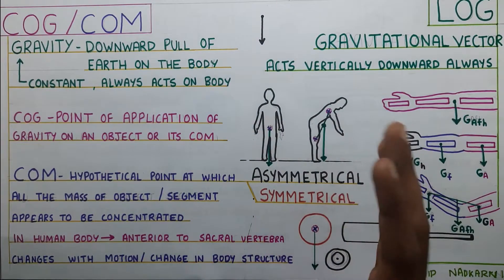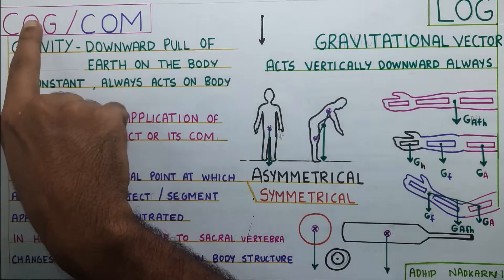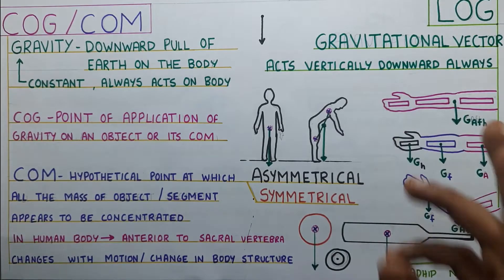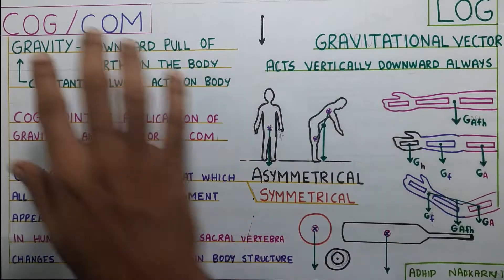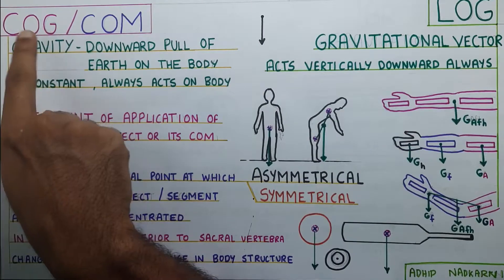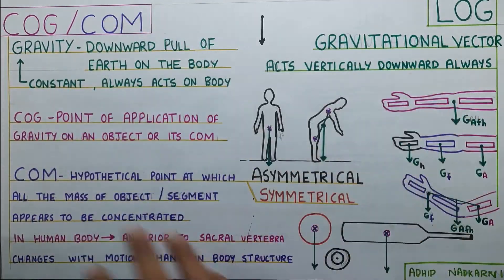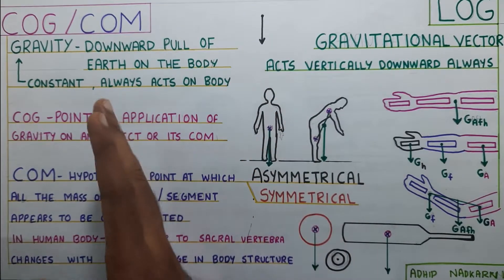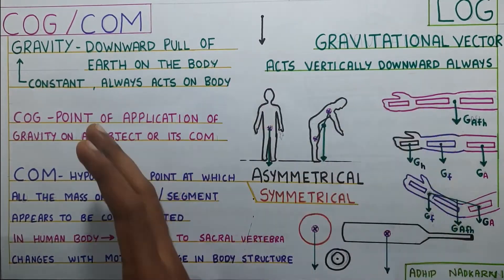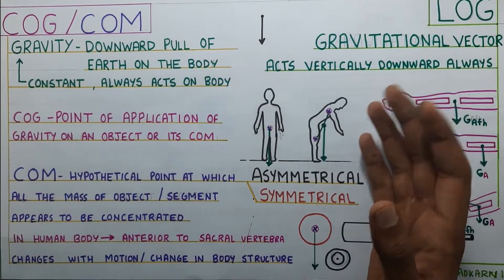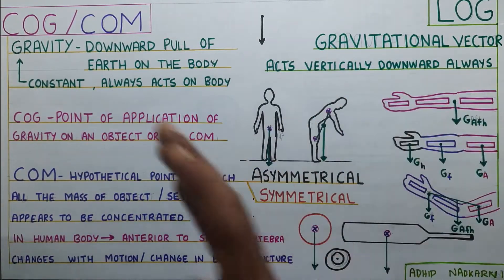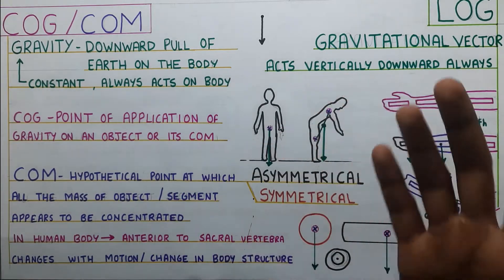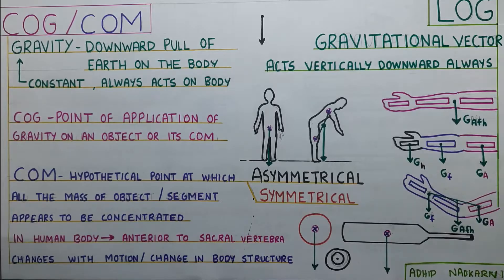In this video, we are going to talk about gravity, the center of gravity, and center of mass. Then we will talk about the line of gravity and also see how all of these — center of mass, gravity, and line of gravity — are interconnected. In the next video, we will be talking about the base of support and also stability and balance, and what is the difference between stability and balance. So all these concepts are very important for your gait and posture, so sit back, relax and let's get started.